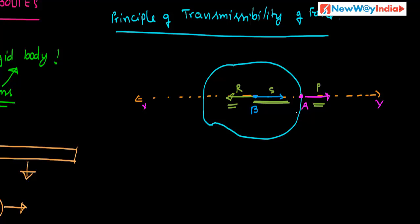In other words, the point of action of force shifts from A to another point. Here the point of action of force A is shifted to B, and B also becomes a point of action of force. The same can be proved for any point on the rigid body along the line of action of force. Hence, the point of action of force can be transmitted anywhere along the line of action of force. This is called the principle of transmissibility of a force.